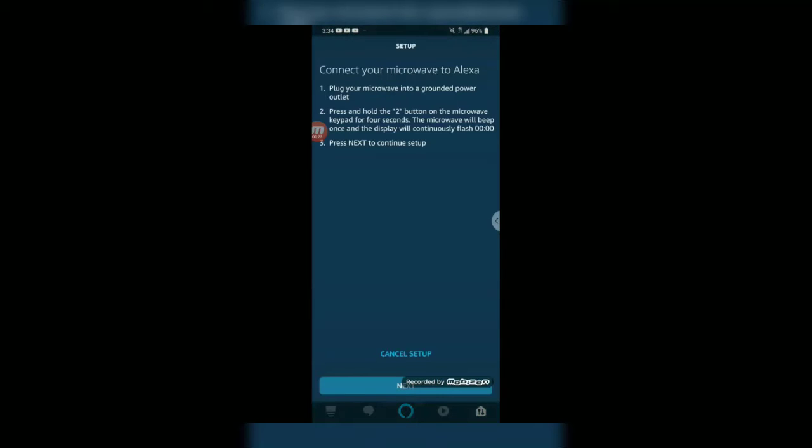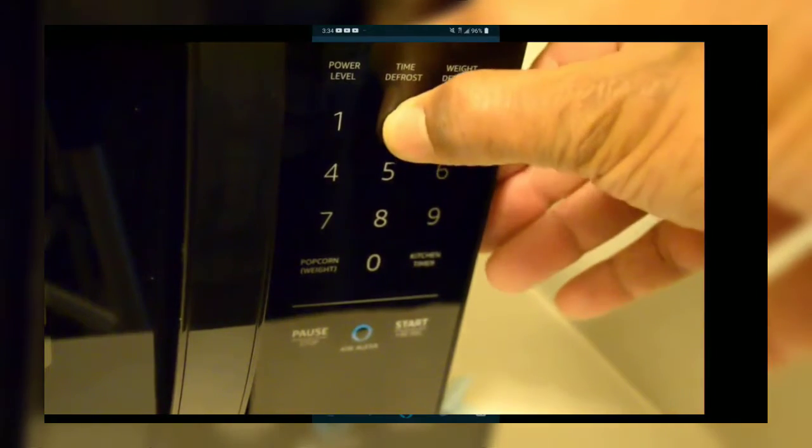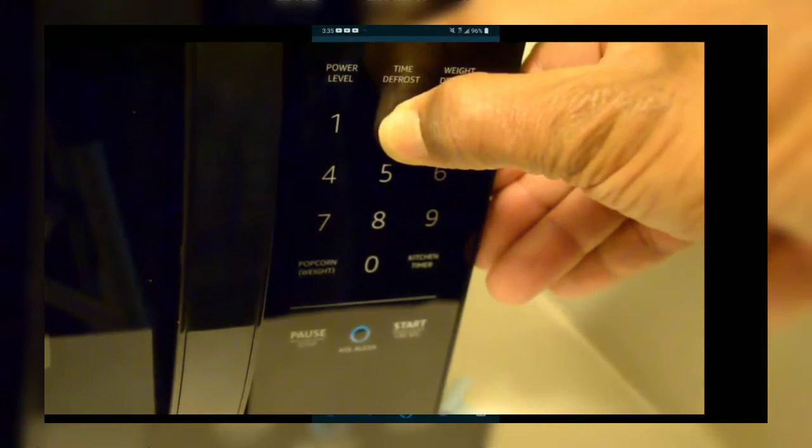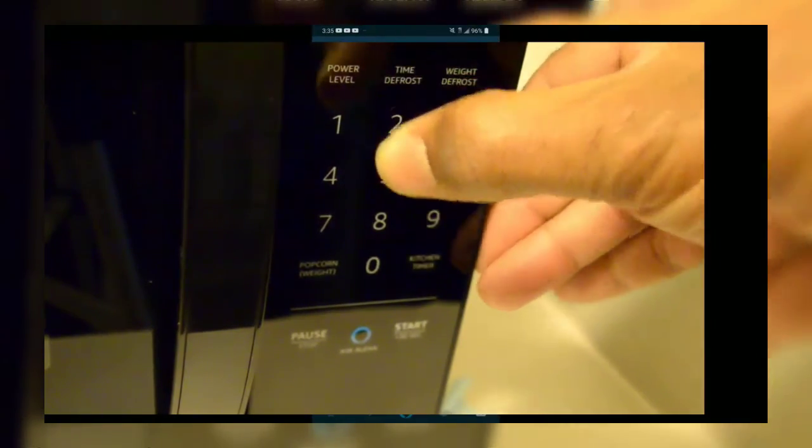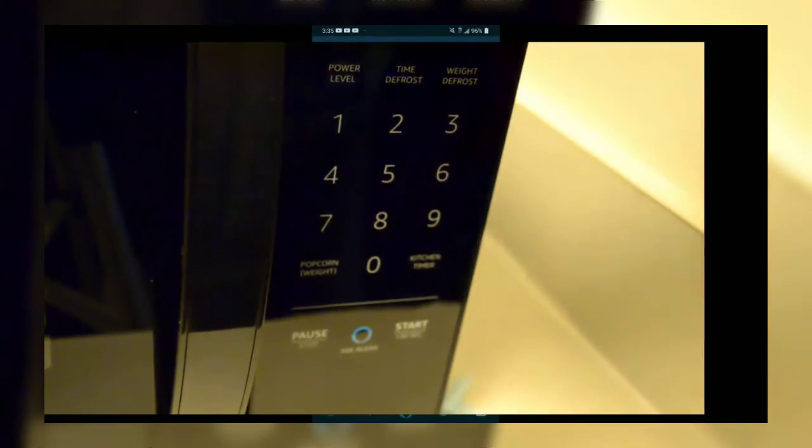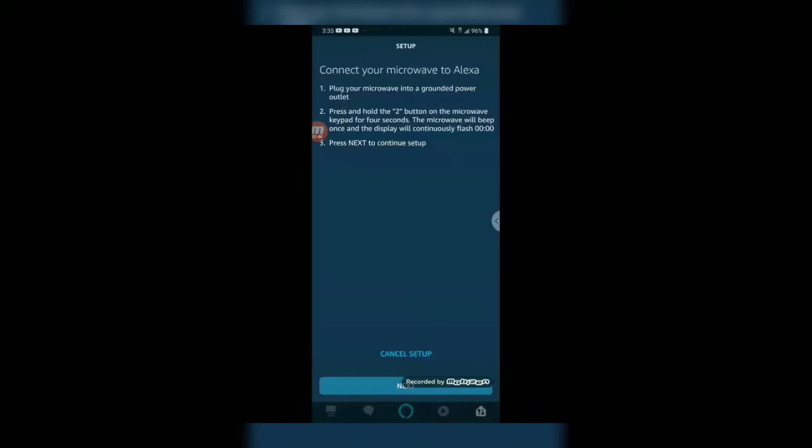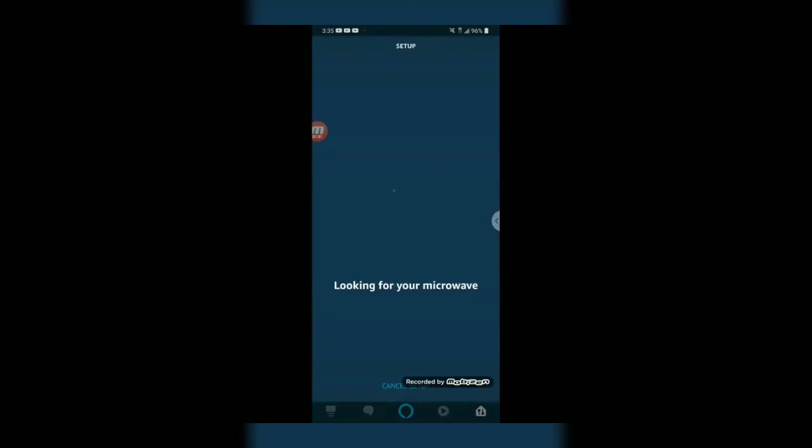Now here's the crucial step. Connect your microwave to Alexa. You have to make sure the microwave is plugged in and then you're going to hold the number two button on the microwave keypad for four seconds. The keypad will beep once and the display will continuously flash zeros. Once you hear that beep, you go ahead and push next for the next step. Now it's looking for our microwave. And for any reason you didn't do the first part right, just go back, cancel setup and start over. Make sure you push that number two button for the full four seconds when you hear that beep.